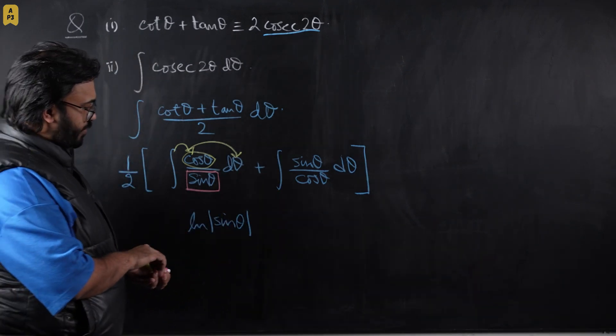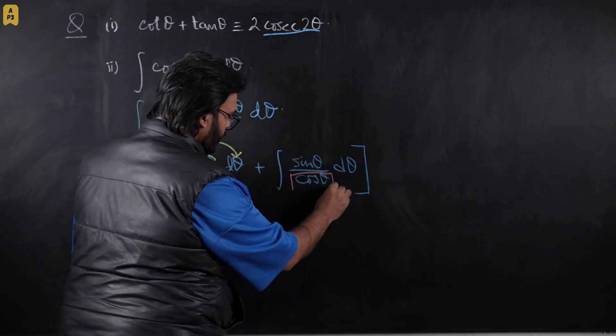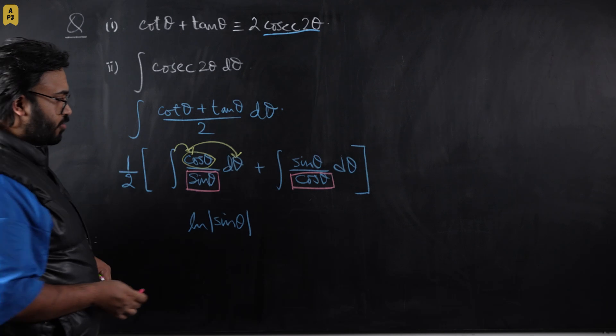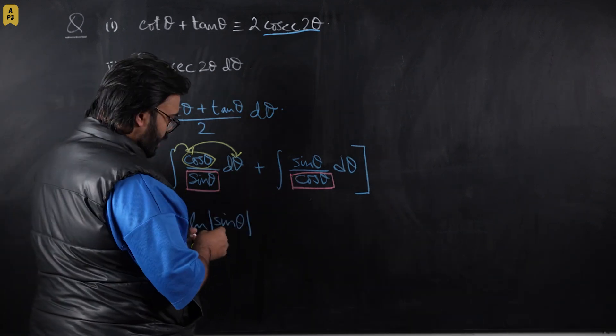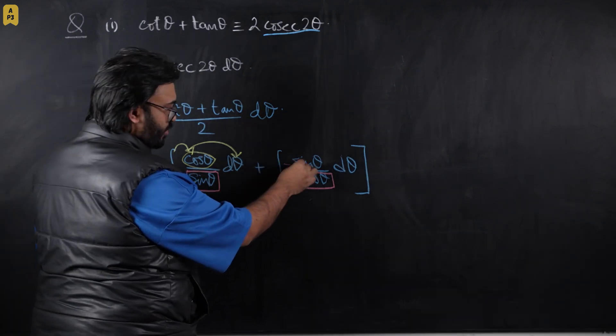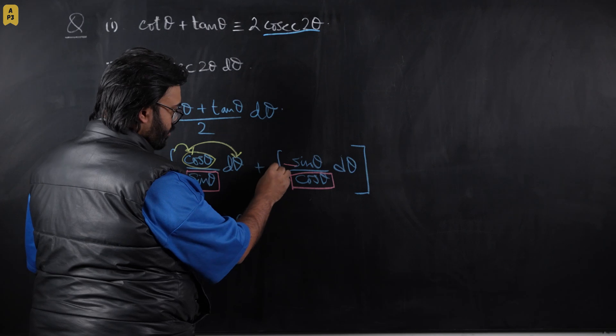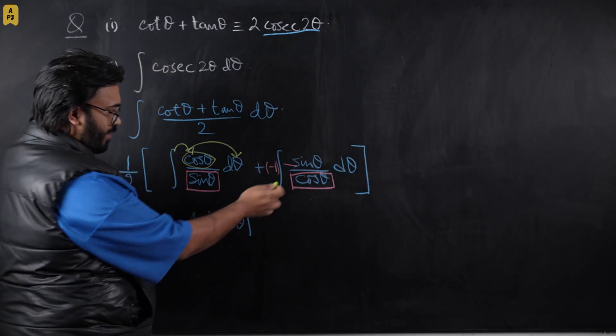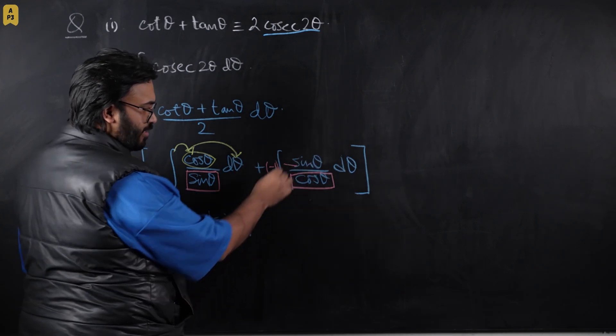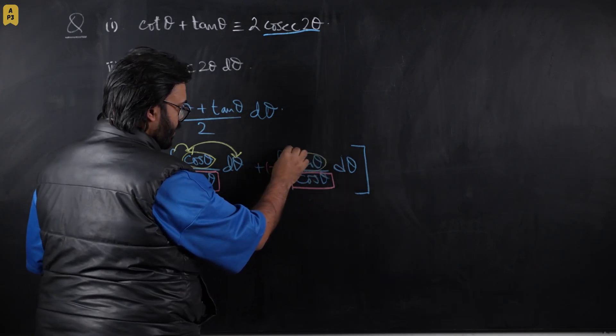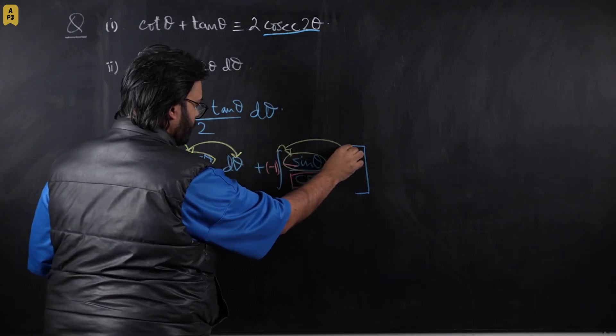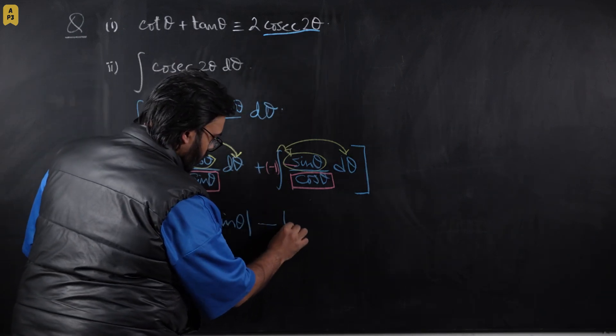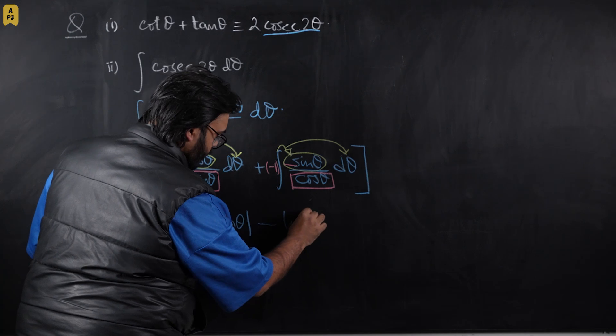And for the second part of this integral, what we're going to do is cos is going to become the box. Differentiation of cos should be present in the numerator to do the same. So differentiation of cos is minus sin θ, so I will have to introduce a negative over here and introduce minus 1 outside to pay off for the imbalance. And now I have differentiation of box in the numerator, so we are going to make that disappear as well, and this will become minus. Plus into minus will become minus log of cos θ.